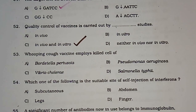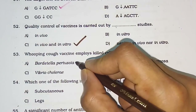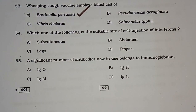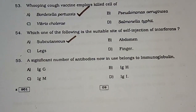Question number 53: Whooping cough vaccine employs killed cells of — (A) Bordetella pertussis, (B) Pseudomonas aeruginosa, (C) Vibrio cholerae, (D) Salmonella typhi. The correct answer is Bordetella pertussis — that is the organism causing whooping cough. Question number 54: Which is a suitable site for self-injection of interferons? The correct answer is subcutaneous.